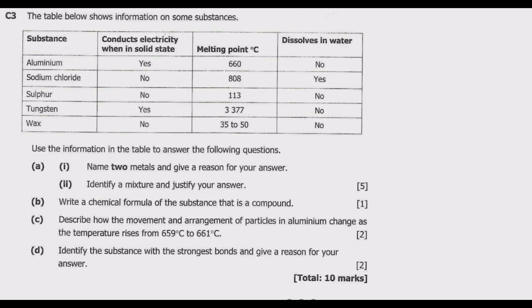The table below shows information on some substances. We have substance, then column 2 conducts electricity when in solid state, column 3 melting point, then column 4 dissolves in water. So we have aluminum, sodium chloride, sulfur, tungsten, and wax. Use the information in the table to answer the following questions.